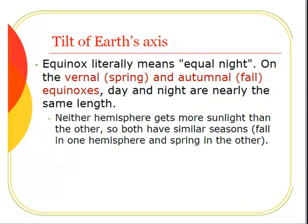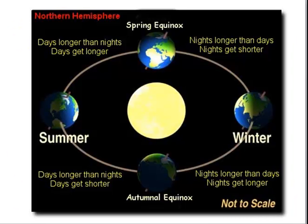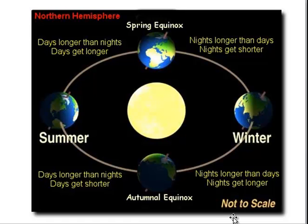Equinox literally means equal night. On the vernal or spring and autumnal or fall equinoxes, day and night are nearly the same length. Neither hemisphere gets more sunlight than the other, so both have similar seasons — fall in one hemisphere and spring in the other. In the spring equinox, days are longer than nights and days get longer. In the autumnal equinox, the nights are longer than the days and the nights get longer and longer.